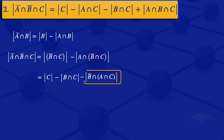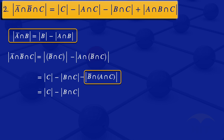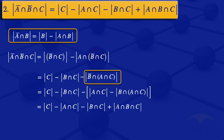We can now apply the earlier result to this part. In the formula, where we have A we replace it with B, and where we have B we replace it with A intersection C. So the expression becomes: cardinality of C minus cardinality of B intersection C, then minus the cardinality of A intersection C minus the cardinality of B intersection A intersection C. Using associative laws, B intersection A intersection C becomes A intersection B intersection C, giving us the cardinality of C minus the cardinality of A intersection C minus the cardinality of B intersection C plus the cardinality of A intersection B intersection C.